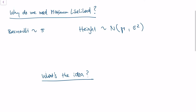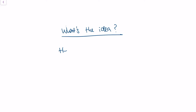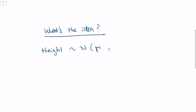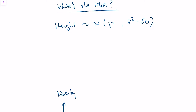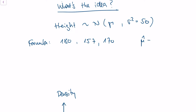So what's the idea behind maximum likelihood estimation? Let's go back to our example of height. We know that height of human beings is normally distributed, but we don't know the mean. Let's say we do know the variance is 50 centimeters. We go out and measure people's heights: 180 centimeters, 157 centimeters, and 170 centimeters. Can we come up with a formula that uses those three observations to estimate our parameter mu? There can be many formulas — for instance, the average.